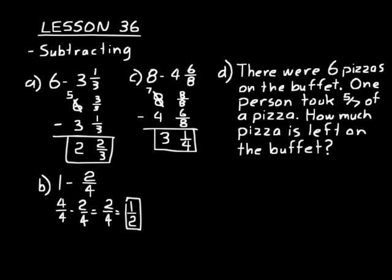So 6 pizzas on the buffet. One person took 5 sevenths. We want to subtract 5 sevenths from the 6 pizzas to see how much is left. And so we'll have 6 and then 5 sevenths. Remember we write the whole numbers kind of in one column. The fraction parts in another column.